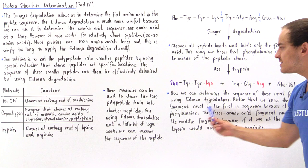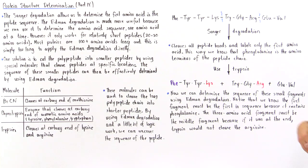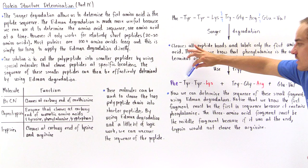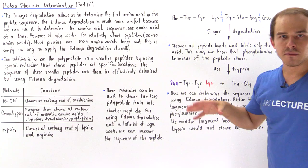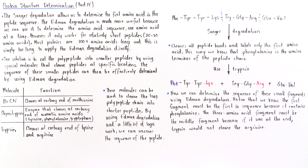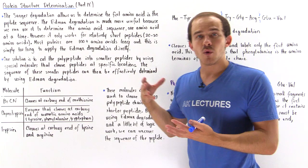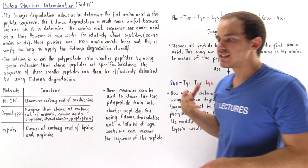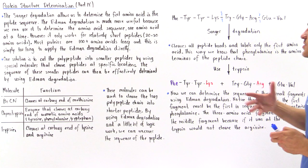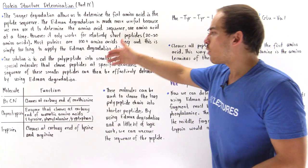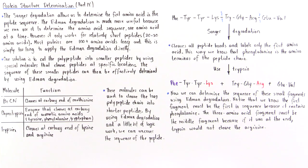By taking each of these small peptides and subjecting them to the Edmond degradation, we can determine the actual sequence of amino acids. Note that in this example we began already knowing the sequence. In practice, we first hydrolyze the molecule to count the types and quantities of amino acids present, then use the Sanger degradation, various cleavage enzymes, and the Edmond degradation together to determine what the full amino acid sequence is.